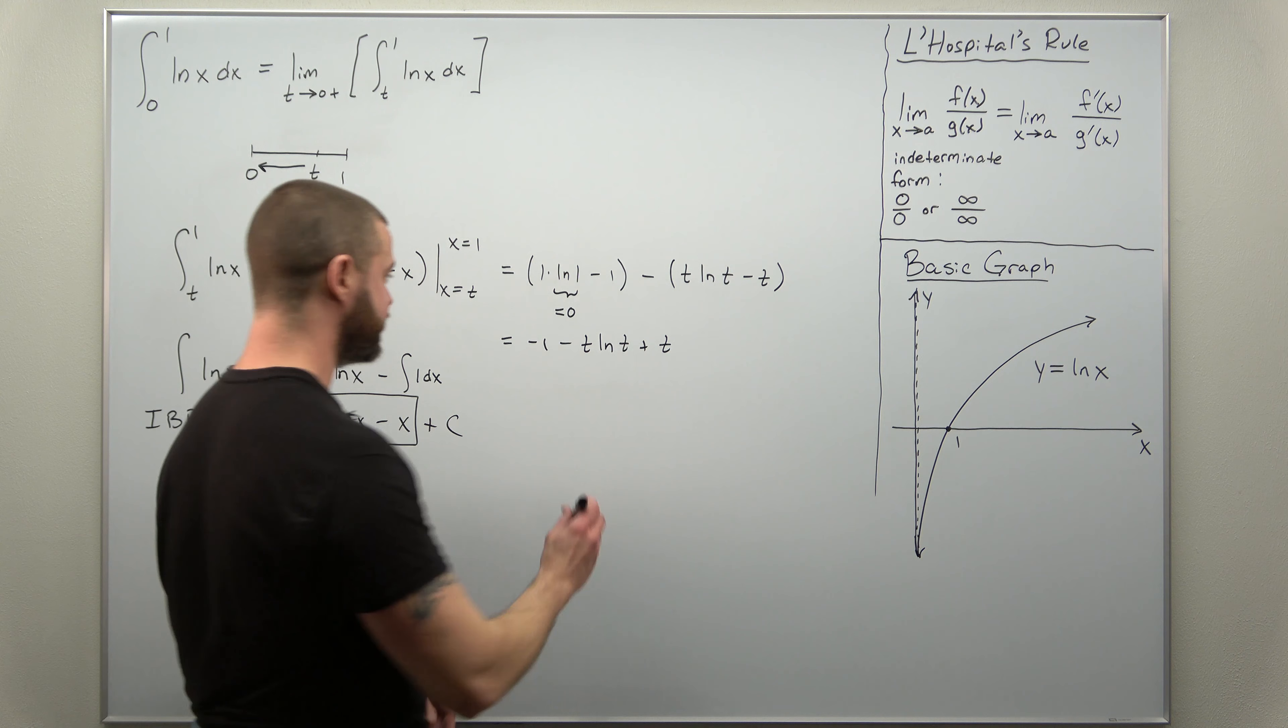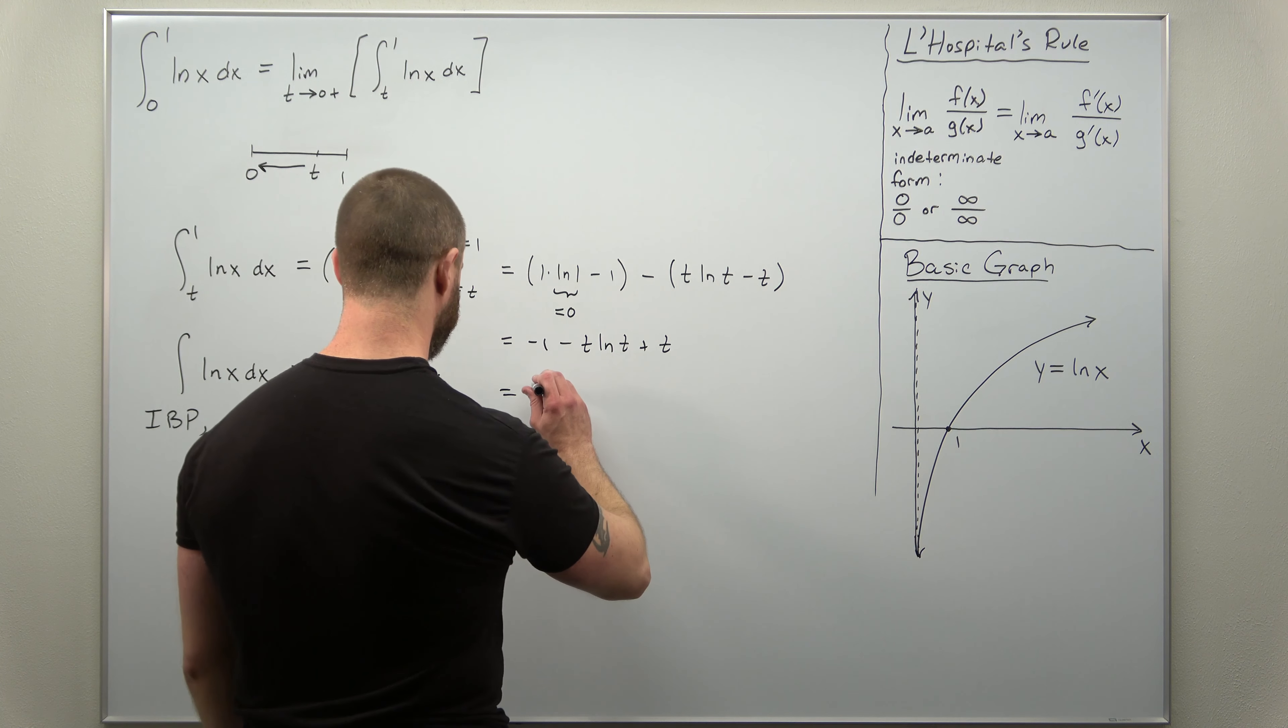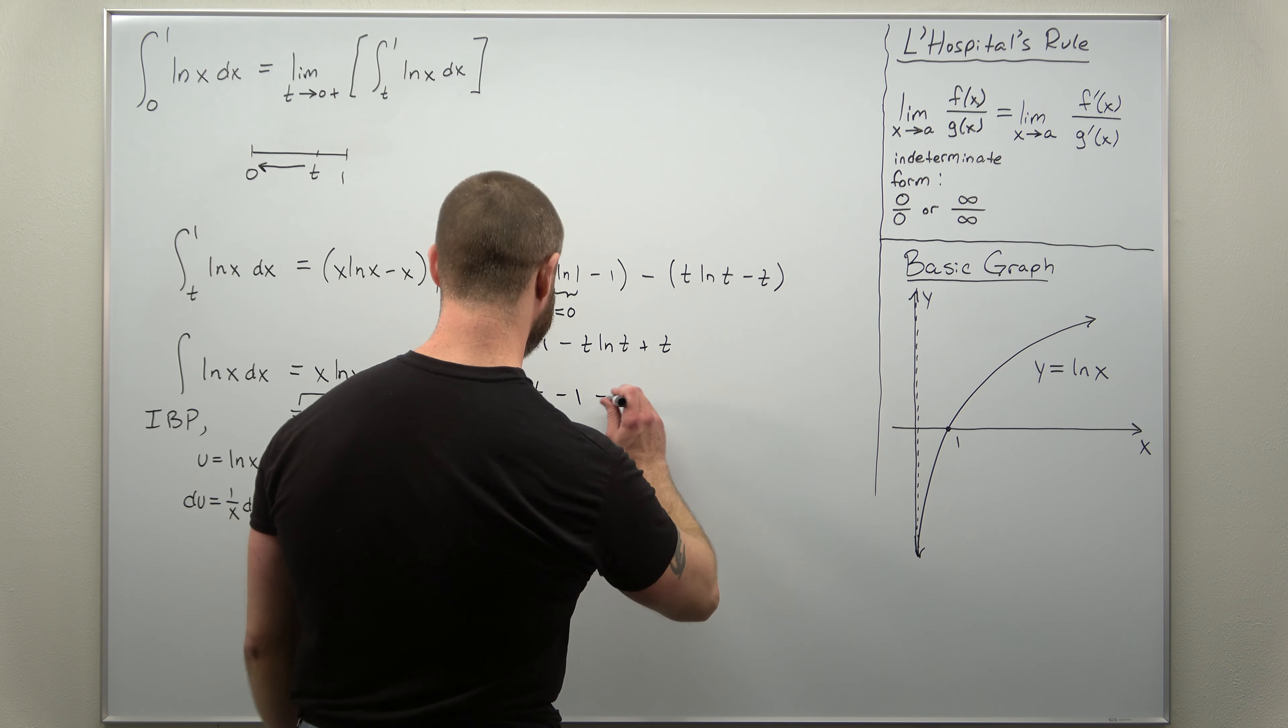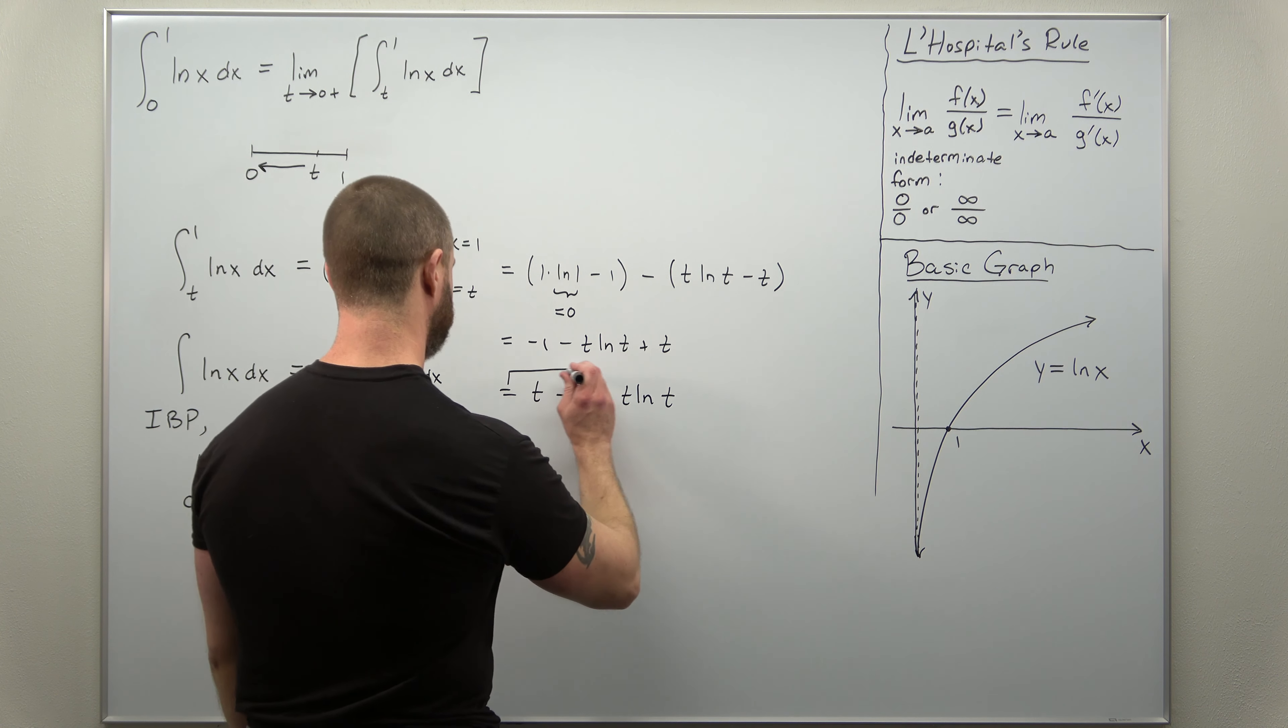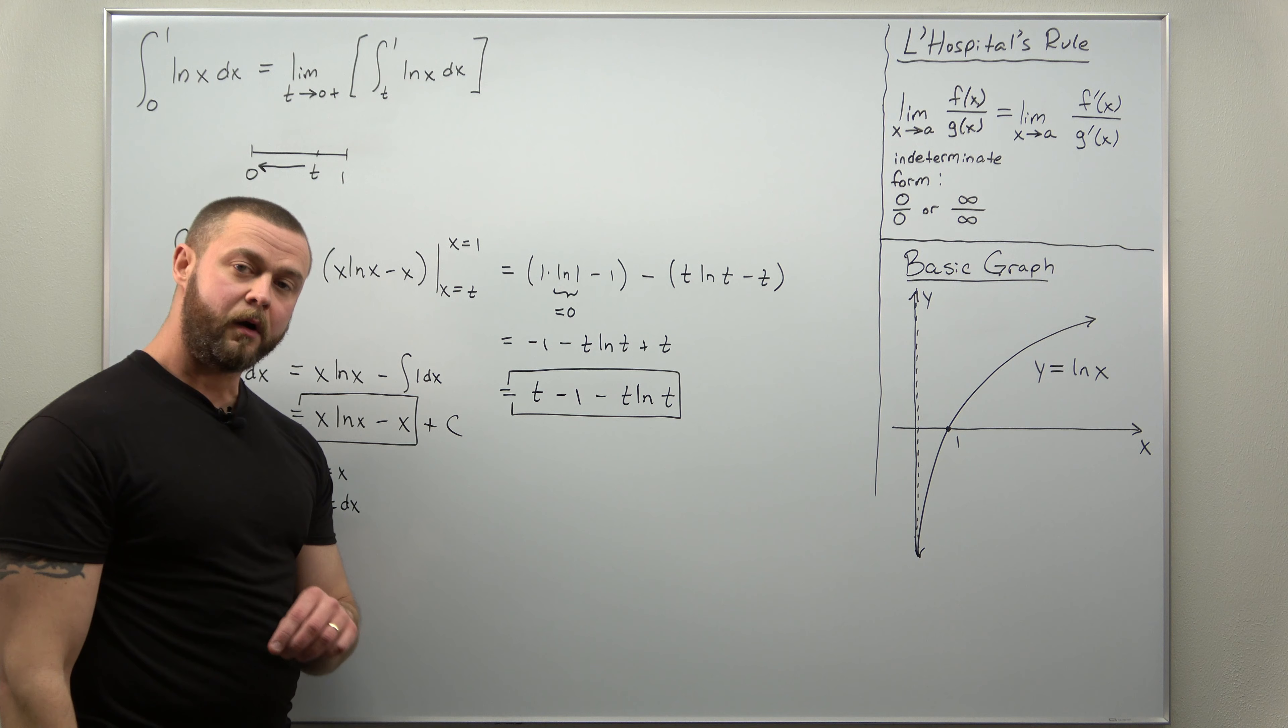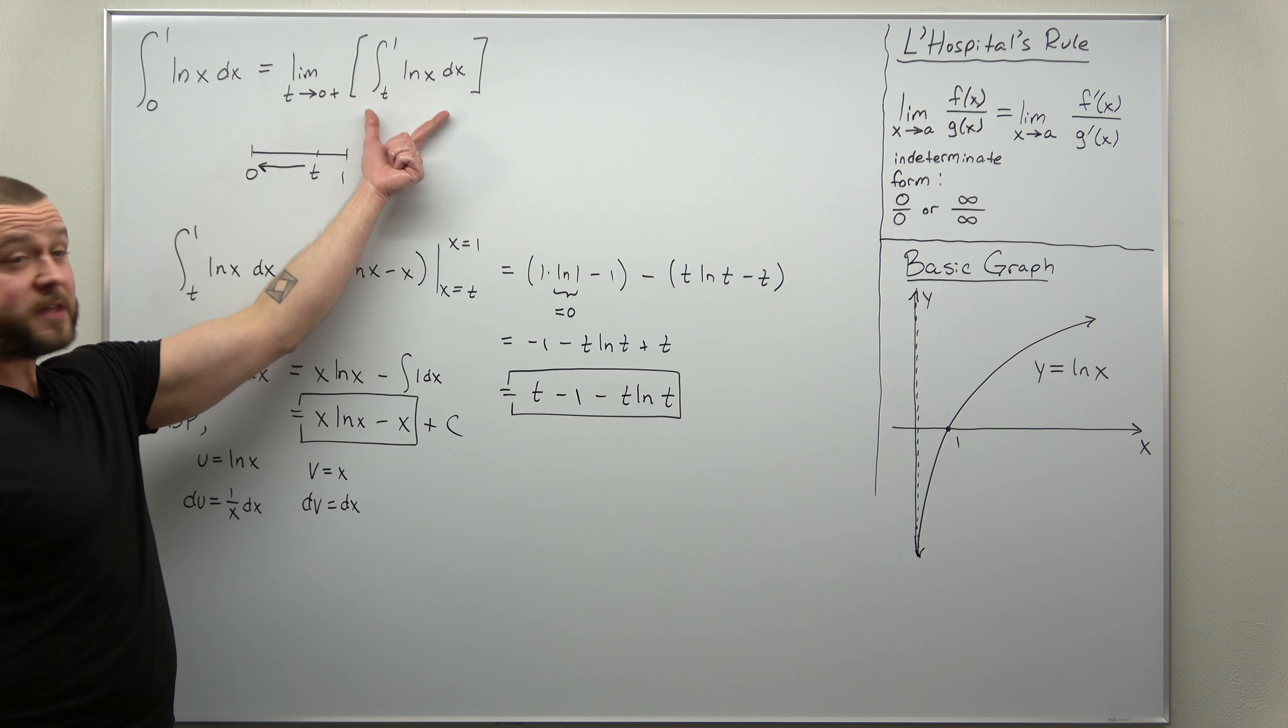All right. And I'm going to just rearrange this. Let me just put the t in front. I'll put the minus 1 and then minus t times ln t. All right. And that is our answer for the integral.